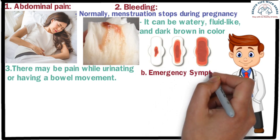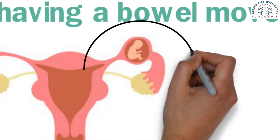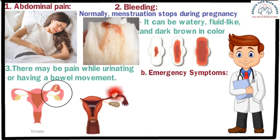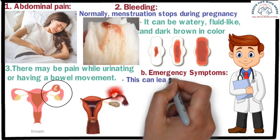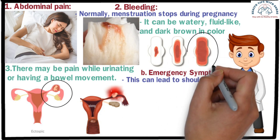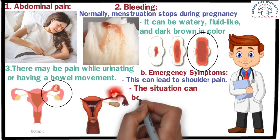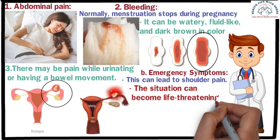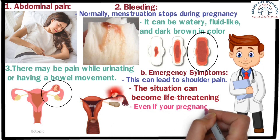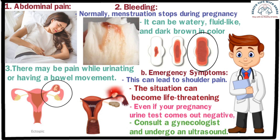Emergency symptoms: In ectopic pregnancy, the embryo implants in the fallopian tube or ovary. Since these have limited space, at a certain point the tube or ovary can rupture — called a ruptured ectopic pregnancy, which is a critical condition. It causes severe abdominal pain, internal bleeding, and can lead to shoulder pain. Due to excessive internal bleeding, the body may become weak and the skin may turn pale. Vaginal bleeding can also occur, and in extreme cases the situation can become life-threatening — even resulting in death. If these symptoms appear after your period has stopped, even if a pregnancy urine test comes back negative, consult a gynaecologist and undergo an ultrasound.